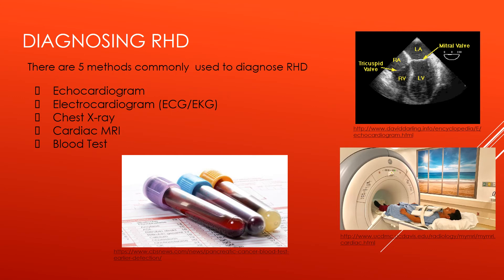A chest X-ray may be done to check a patient's lungs and determine if the heart is enlarged. A cardiac MRI is an imaging test that takes detailed pictures of the heart; it may be done to get a more precise look at the heart valves and the heart muscle. And finally, blood tests may be used to look for an infection or inflammation.